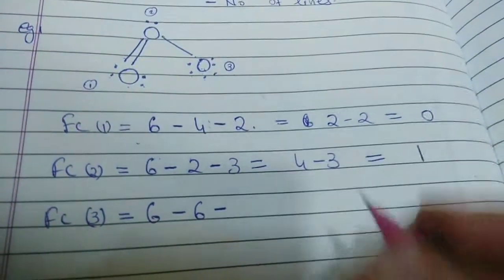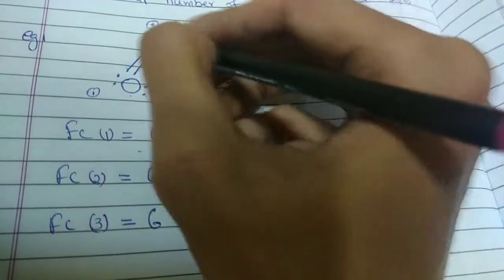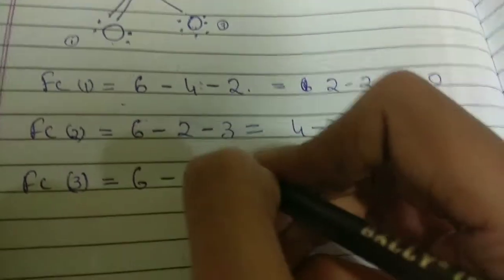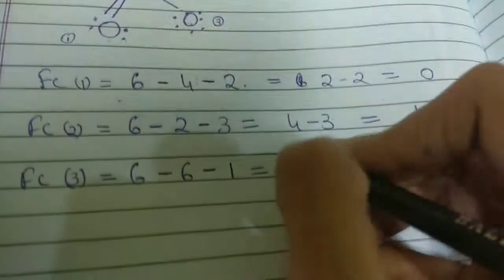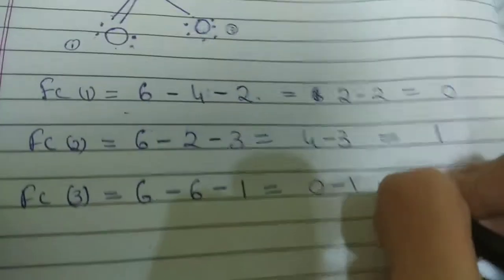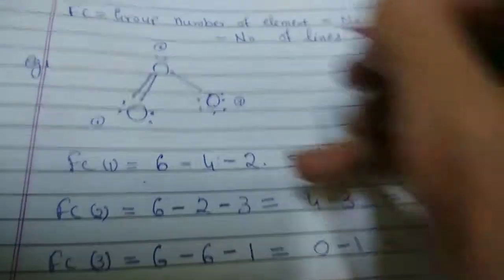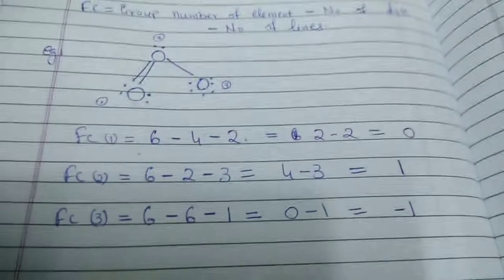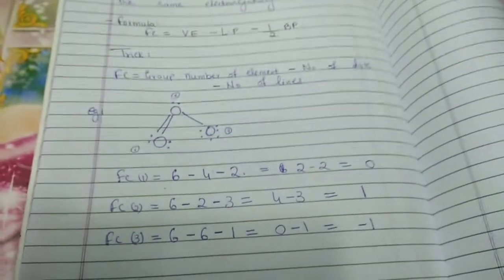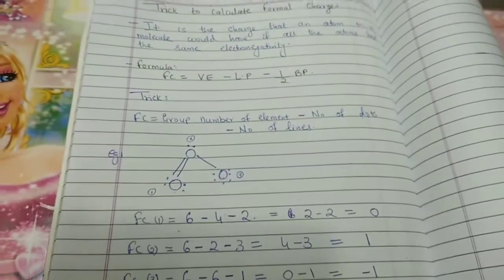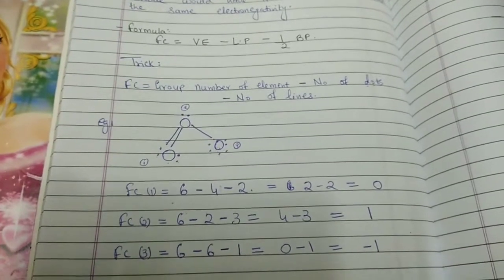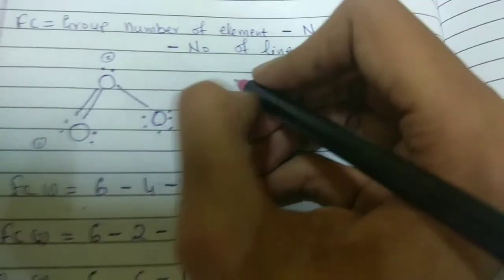Then, we have number of lines. So, this oxygen is linked to the second oxygen via a single bond. So, there is only one bond present. So, we write minus 1. So, this becomes 0 minus 1 which is equal to minus 1. So, isn't this easy? I find it very easier. I hope you all do.